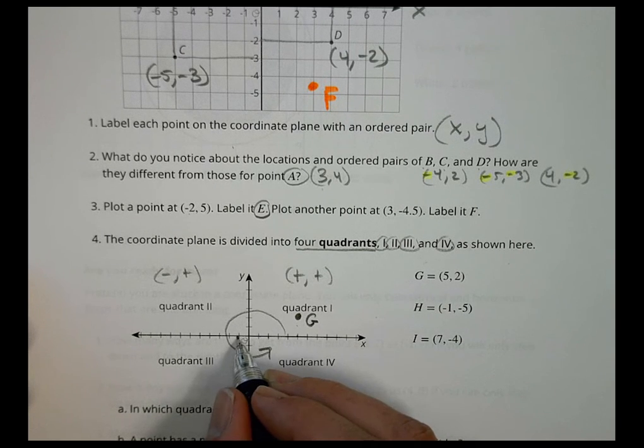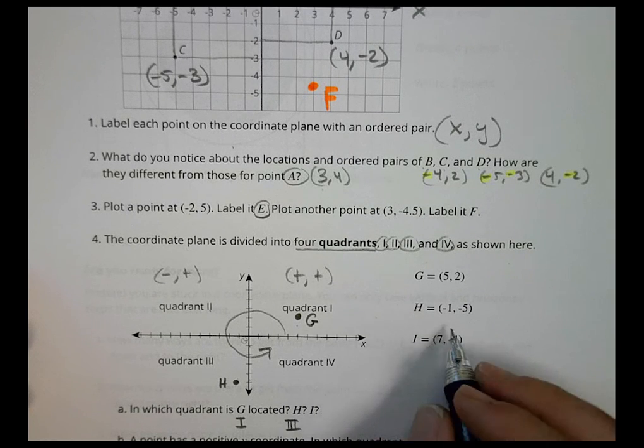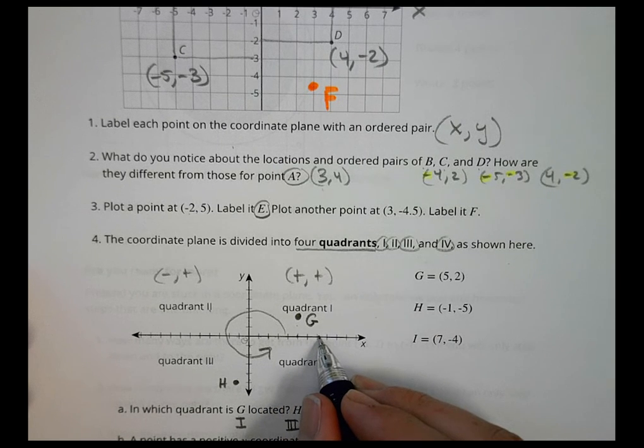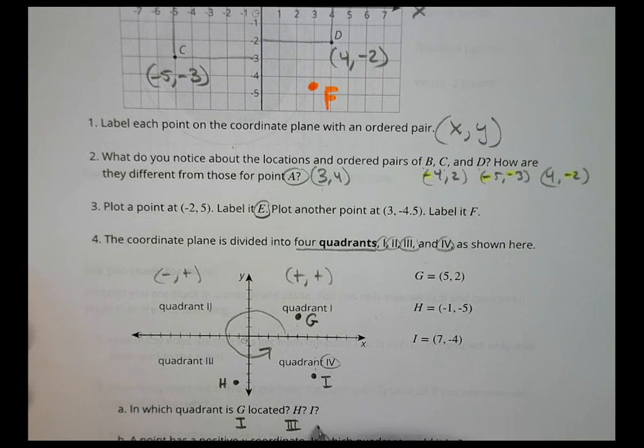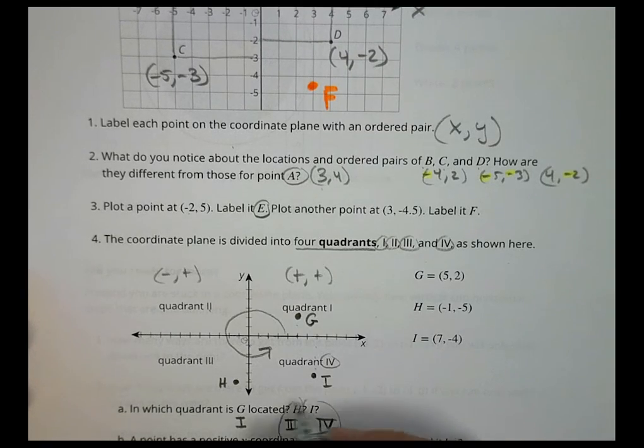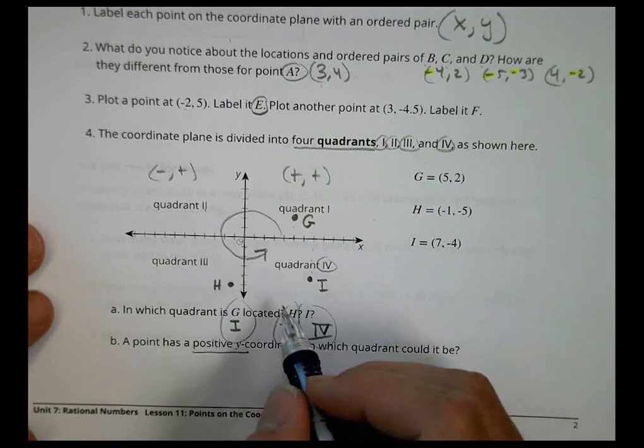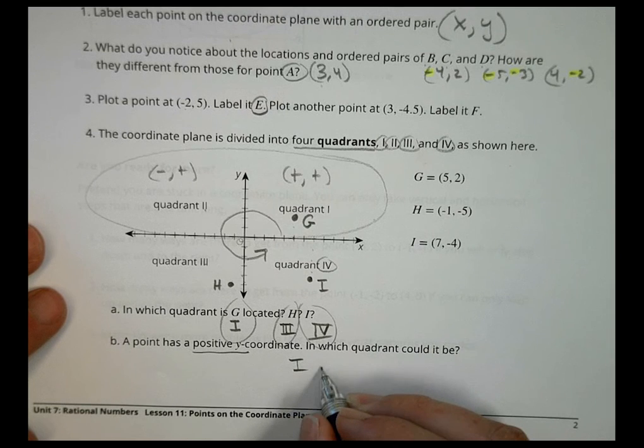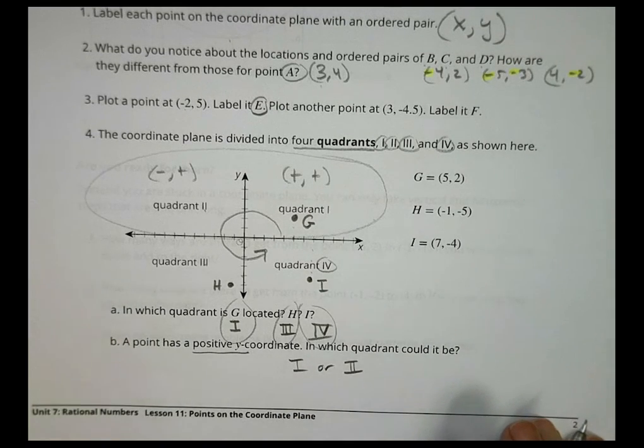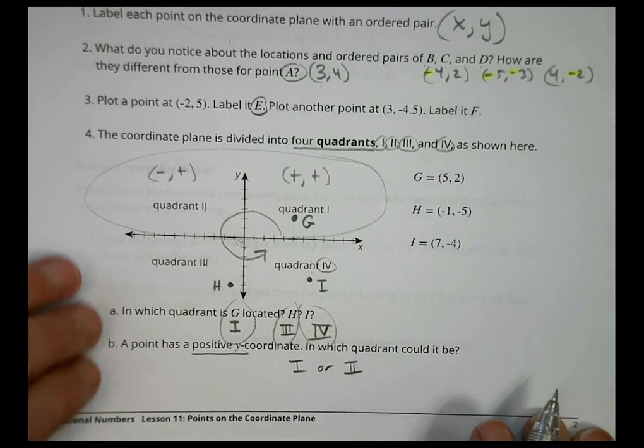H is at negative 1 and then down 5: 1, 2, 3, 4, 5. So H is right here, which puts it in quadrant 3. And then I is in 7: 1, 2, 3, 4, 5, 6, 7, and then we're going down 4: 1, 2, 3, 4. And there's I, and I is in quadrant 4. A point has a positive y-coordinate. Which coordinate could it be? Well, y is positive in all of these values there, which means that it could be in quadrant 1 or it could be in quadrant 2. Both would be possible because that's where y is positive. Everything below the x-axis has y as being a negative value there.